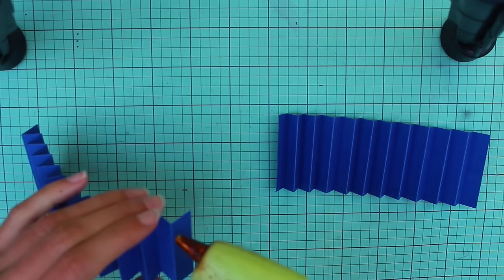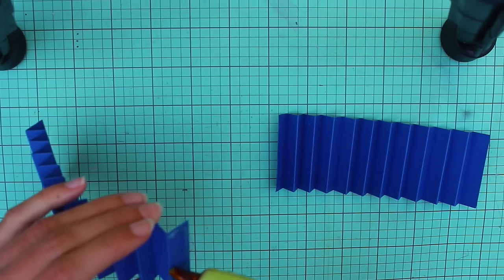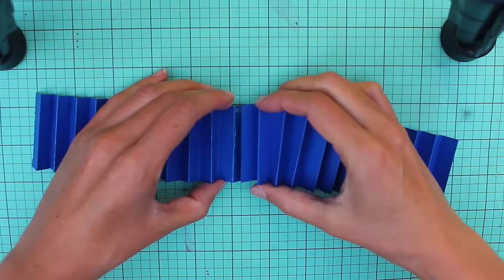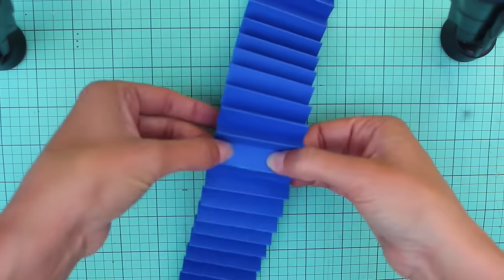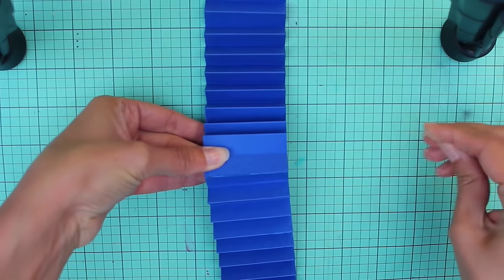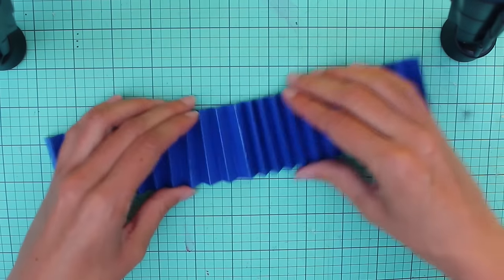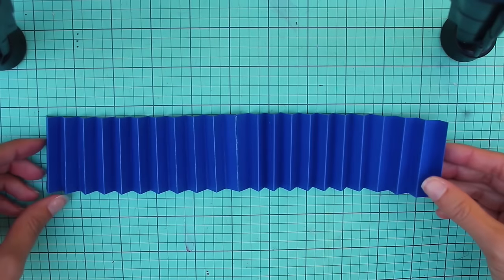Just take some hot glue and put it here on the end, and then just glue that other end piece in place. Make sure it's well attached, and then you can fold that back up so it looks like this.